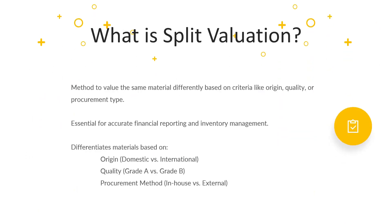Split valuation allows us to evaluate the stocks of the same material separately within a particular valuation area, which can be a company code or a plant. This is essential when materials come from different origins, have different quality grades, or are managed differently due to procurement methods or the production process. For example, if you are procuring a raw material from both local and international vendors, the cost will likely vary and it is essential to reflect this difference in your financial records. Similarly, the same material in different conditions — new, refurbished, or damaged — will each have a different value, and split valuation helps manage these variations effectively.